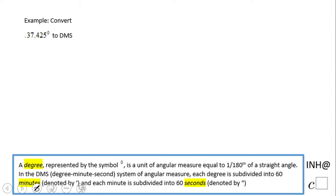Welcome or welcome back to NH at C squared. In this problem, we're going to look at how to convert 37.425 degrees to DMS format.